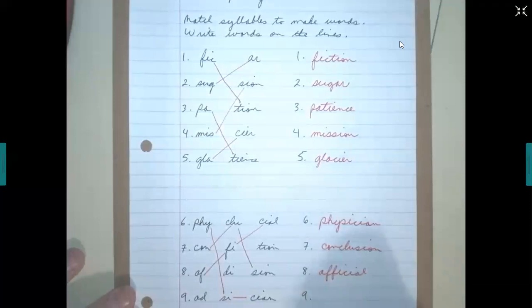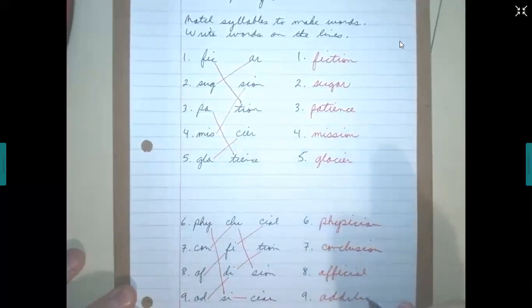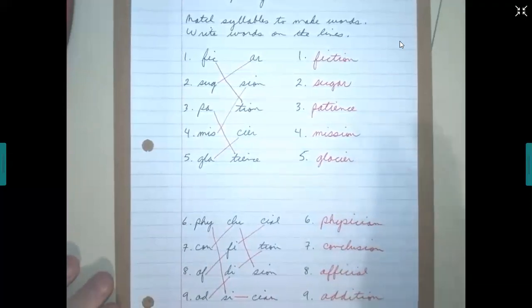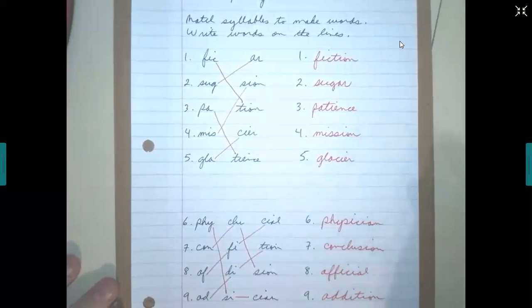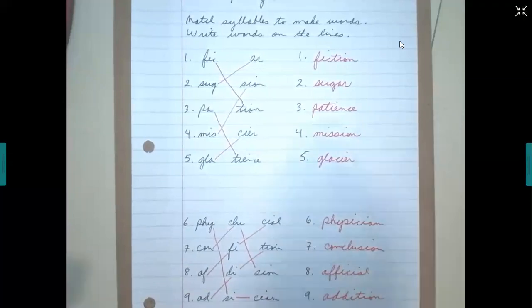And number nine, we want to match with addition. That is our word study for today. You need to check for your assignments on RenWeb for spelling list 23. It's good to be with you today. You have a good day, and we will see you soon. Bye bye.